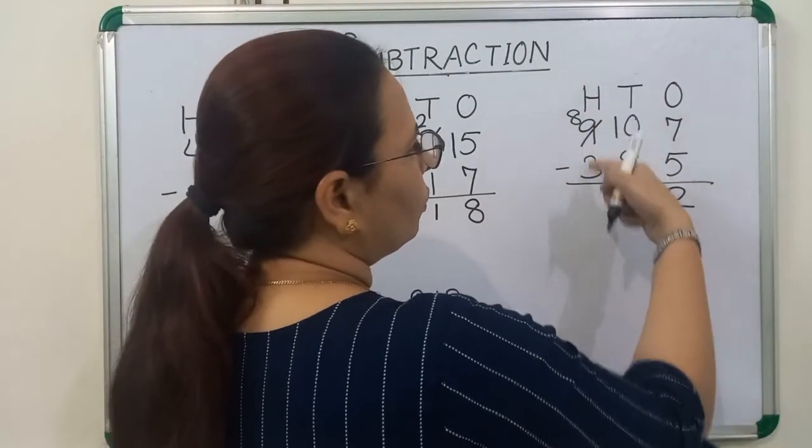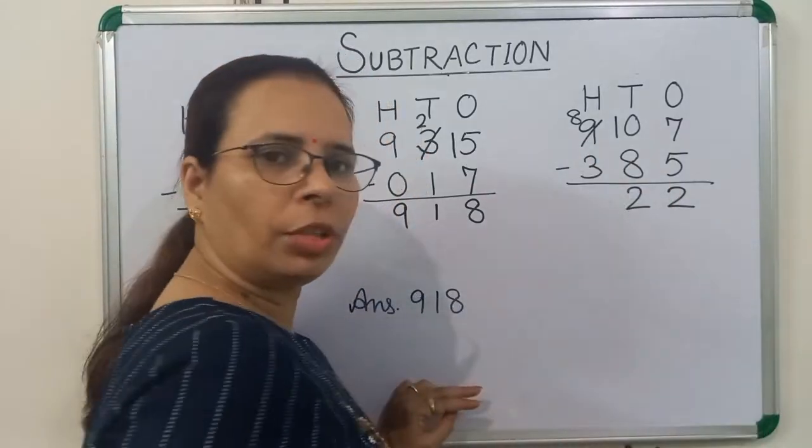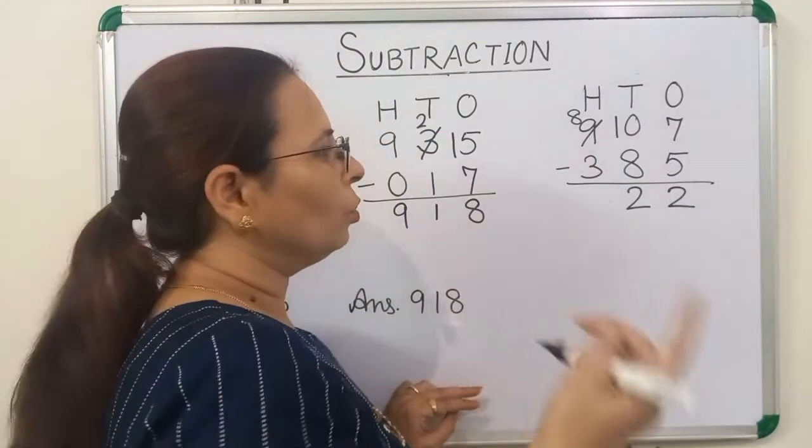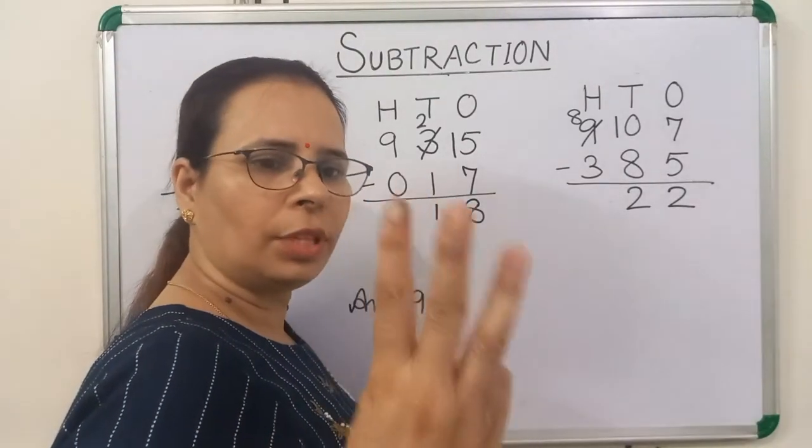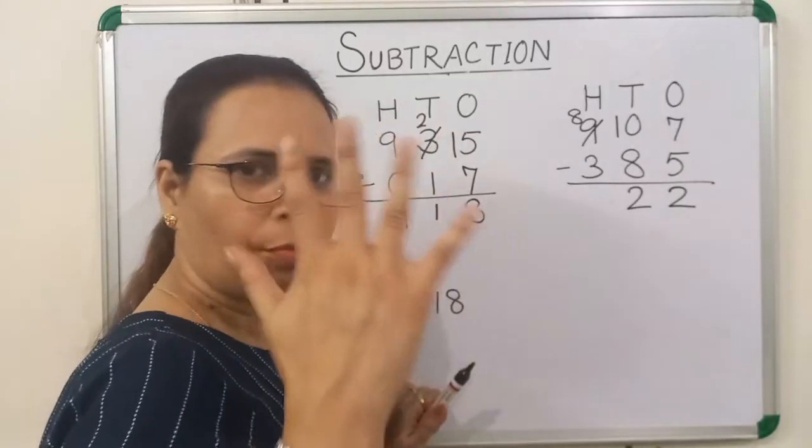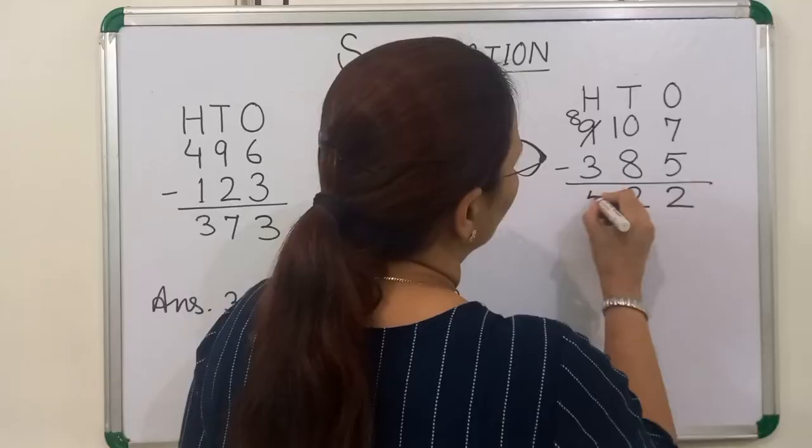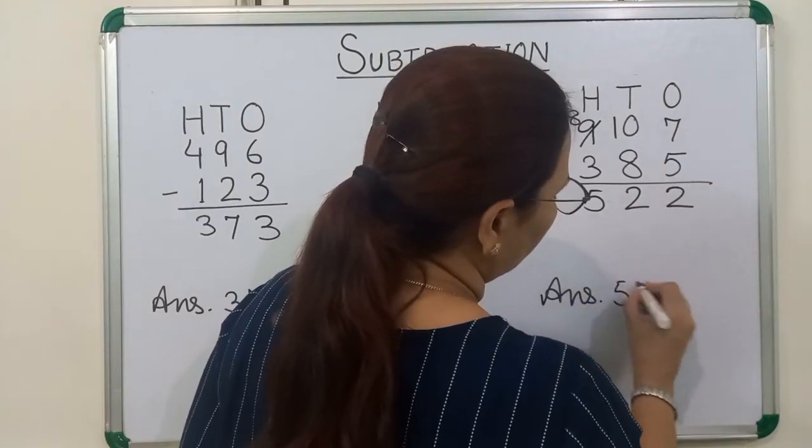Now we will subtract 3 from 8. So count after 3 till 8. So what is after 3? Start counting. 4, 5, 6, 7, 8. How many fingers are out? 5. We will write here 5. Our answer is 522.